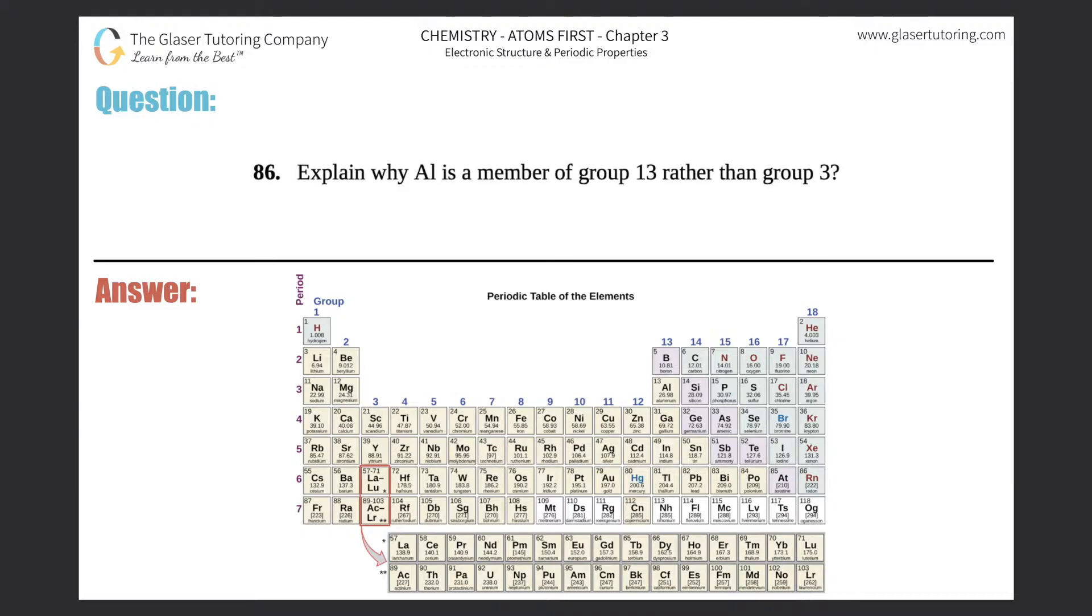Number 86: Explain why Al is a member of group 13 rather than group 3. This is a theoretical question. They want to know why aluminum (Al) is a member of group 13.